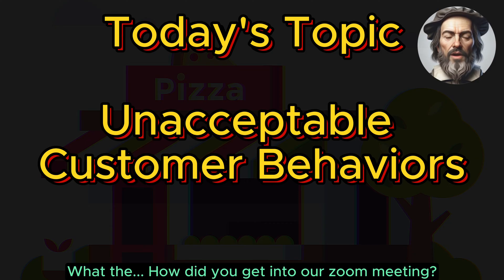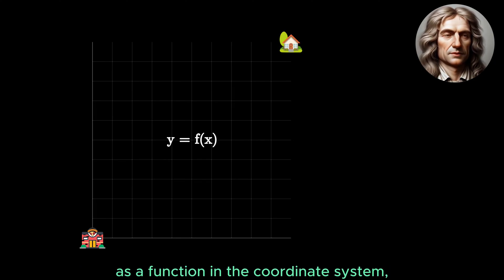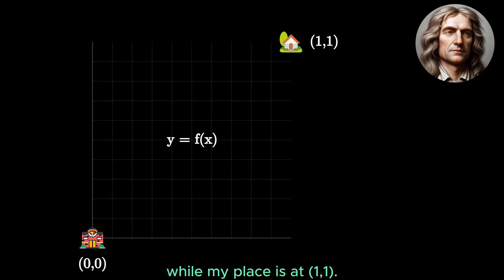What? How did you get into our Zoom meeting? It doesn't matter, Mr. Galileo. If you treat the path from your shop to my home as a function in the coordinate system, your shop has a coordinate of 0,0, while my place is at 1,1.